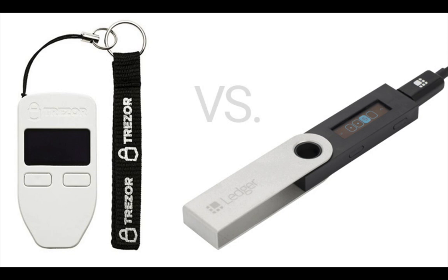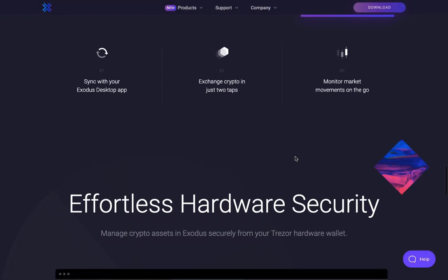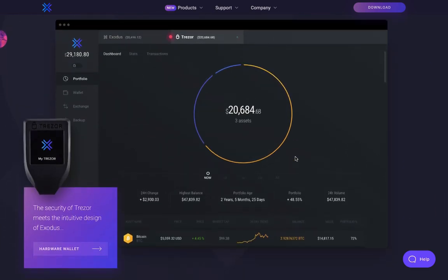Hardware wallets are typically used for long-term storage, and if you are interested in purchasing any of these hardware wallets, my affiliate links are in the description below. Exodus also has a partnership with Trezor, and you're able to use the Trezor hardware wallet on the Exodus platform.